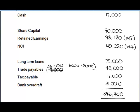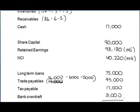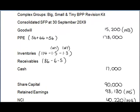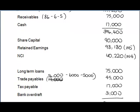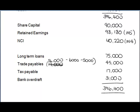The bottom half of the statement of financial position is 396,400. On the top half: inventories are 111,200, receivables are 75, and the top half of the SFP also adds up to 396,400. Our statement of financial position balances.